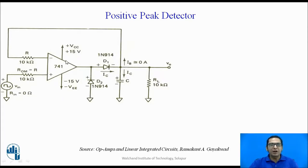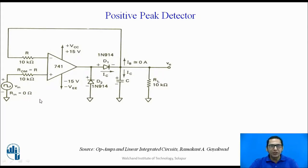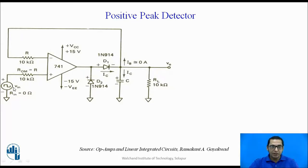The op-amp requires dual power supply: plus Vcc of 15V and minus VEE of minus 15V. There is a load resistance and a capacitor, which detects the peak voltage. There is also a resistance ROM, used for compensation of the input bias current. Together, this circuit acts as a peak detector.